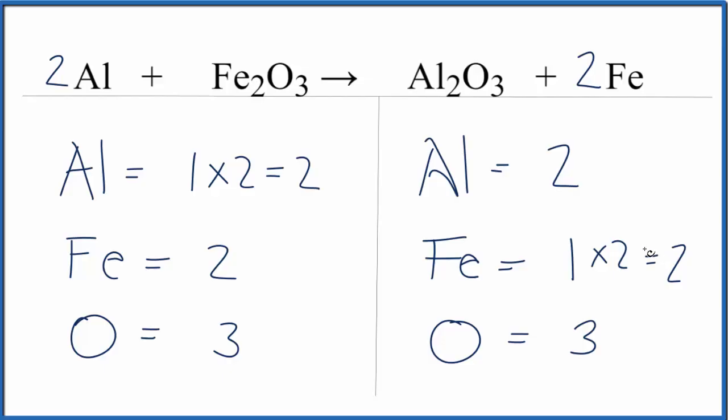We're obeying the law of conservation of mass, and this equation is balanced. This is Dr. B with the single displacement or replacement reaction of Al plus Fe2O3 yields Al2O3 plus Fe.